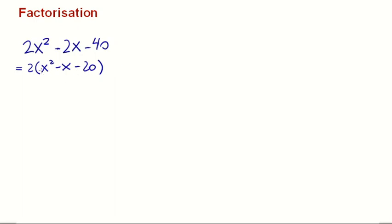If you look inside now, we've got x squared minus x minus 20, so we have to look for a sum and a product. We're looking for sum negative 1, and product negative 20.